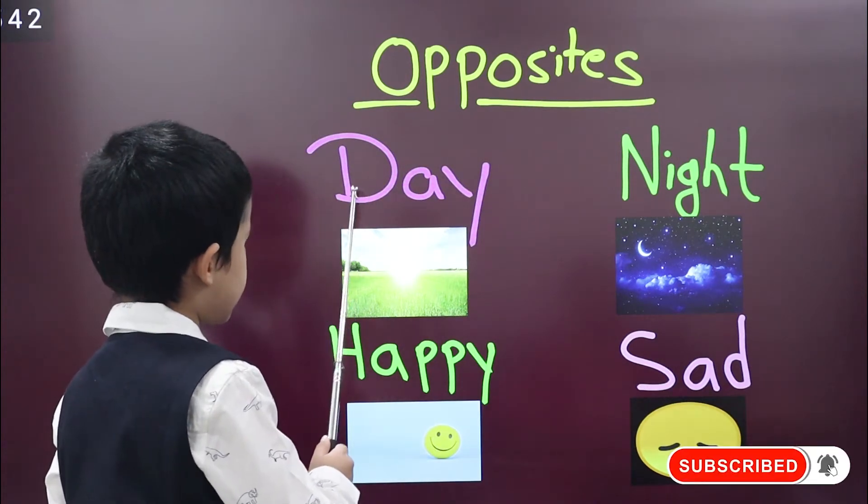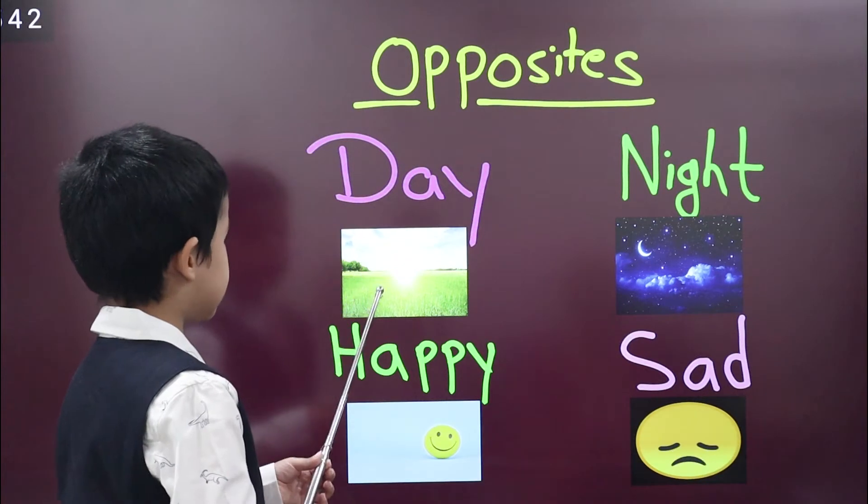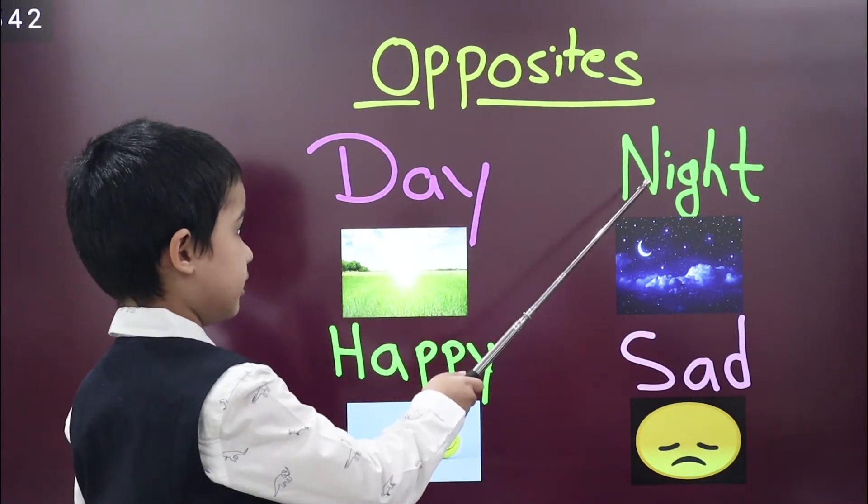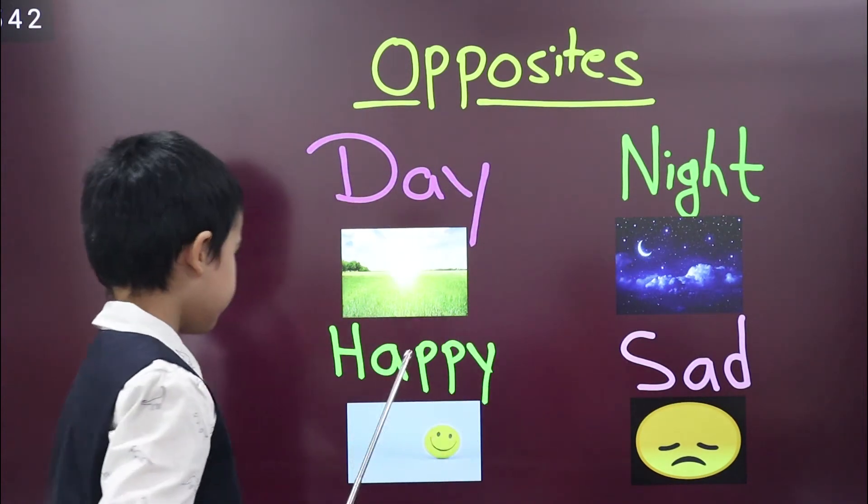This is first word, day. In day we can see sun in the sky. Opposite of day is night. In night we can see moon and stars in the sky.